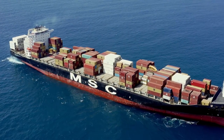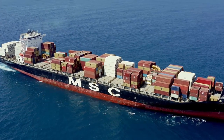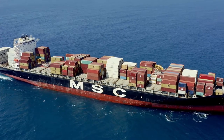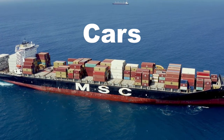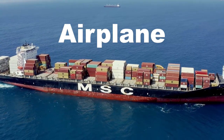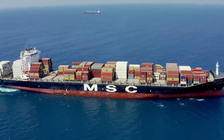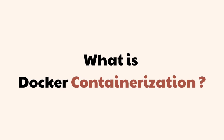Shipping containers are a perfect example to understand Docker containers from a different perspective. Containers are mainly used to ship cargoes like bicycles, cars, and buses. Similarly, in a Docker container we store our application and then deploy it on a server.